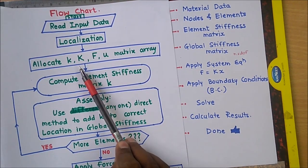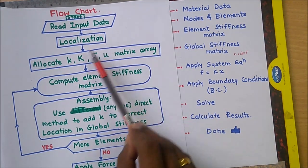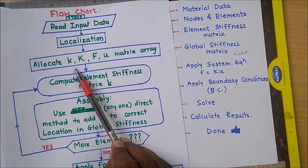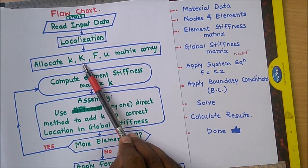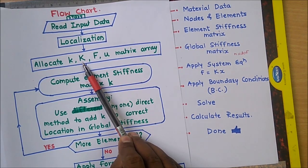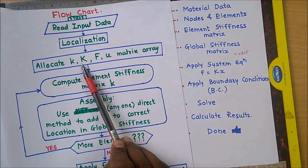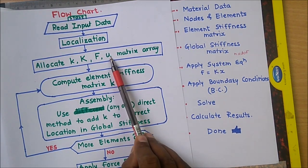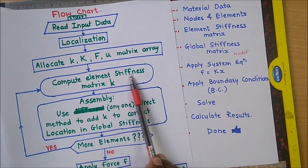Initially the computer does not know the size of these matrices, so we have to prepare a zero matrix having the size of the K matrix. According to our problem we will determine what size K is — for example, if it is 2×2, we prepare a 2×2 zero matrix. For the global stiffness matrix, we prepare a global K matrix of all zeros having size n×DOF. Similarly, we initialize a force column vector and a U column vector of all zeros. Then we will go for computing the stiffness matrices.